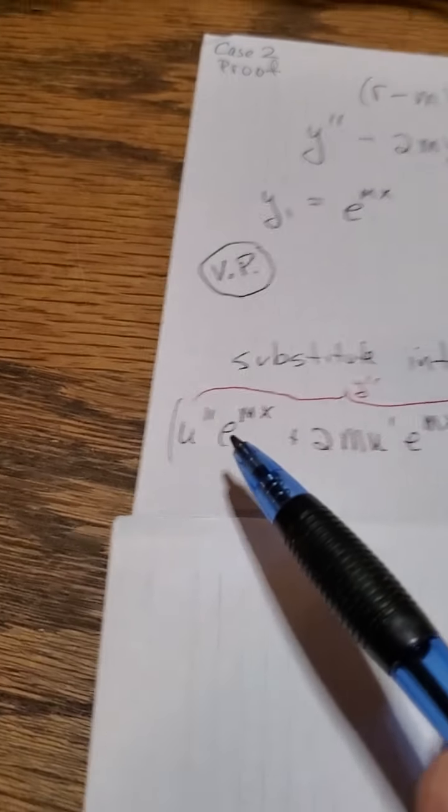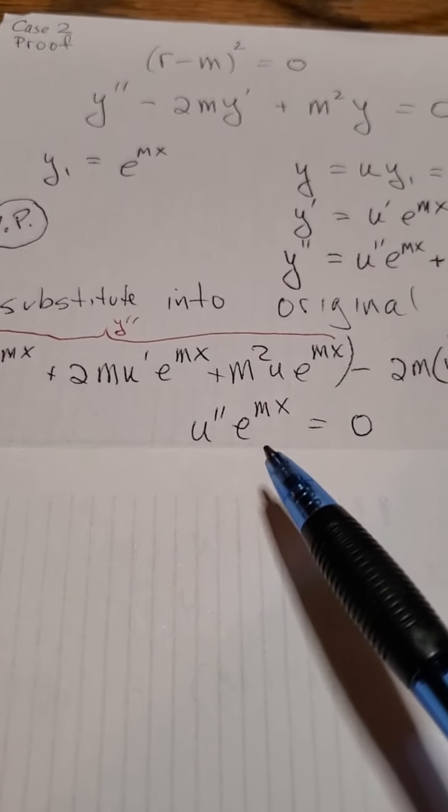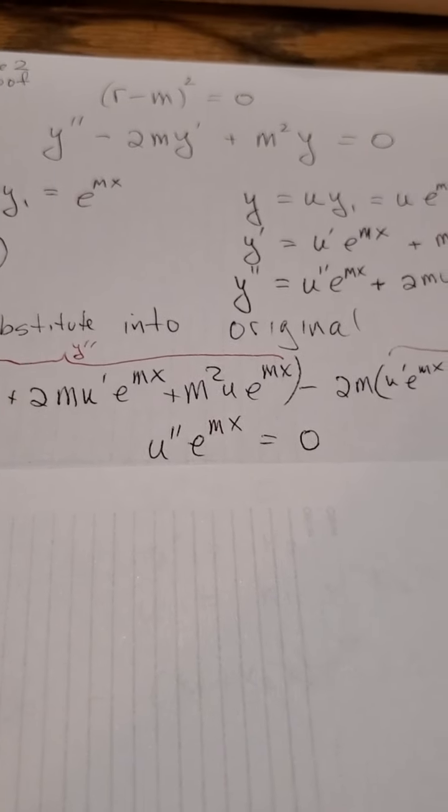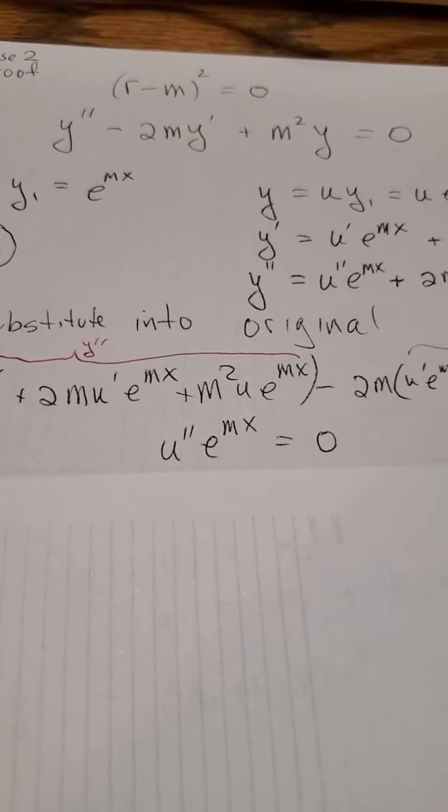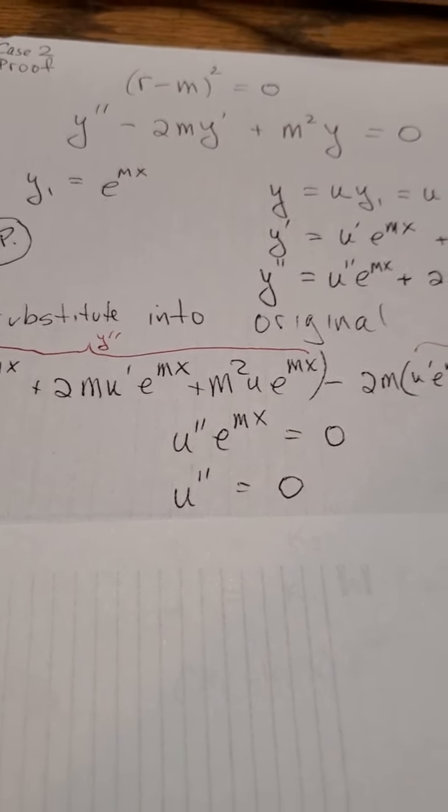That term right there is the only thing that's not going to cancel. Everything else is just going to, with algebra, disappear. And I get u double prime e to the mx equals zero. Now I want to find u. So if u double prime, well first of all I can get rid of the e to the mx because e to the mx is never zero, so I could divide by e to the mx, so we're good.